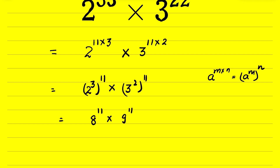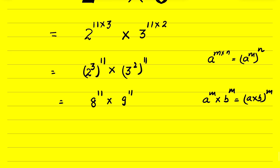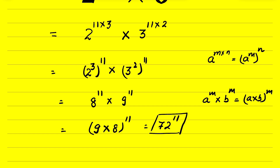Now we know that if a raised to the power m times b raised to the power m, we can write it as a times b, whole raised to the power m. So this becomes 9 times 8, whole raised to the power 11, which gives 72 raised to the power 11. This is our answer.